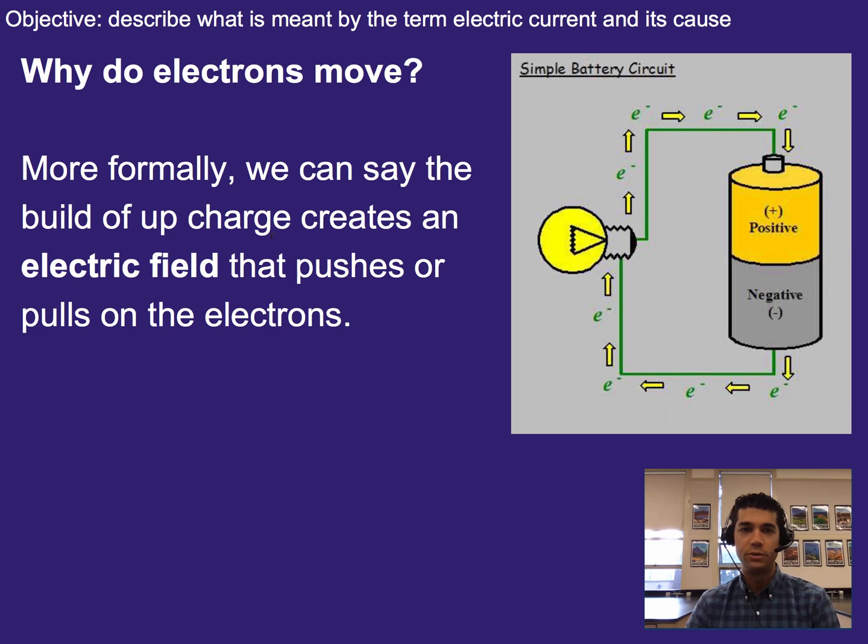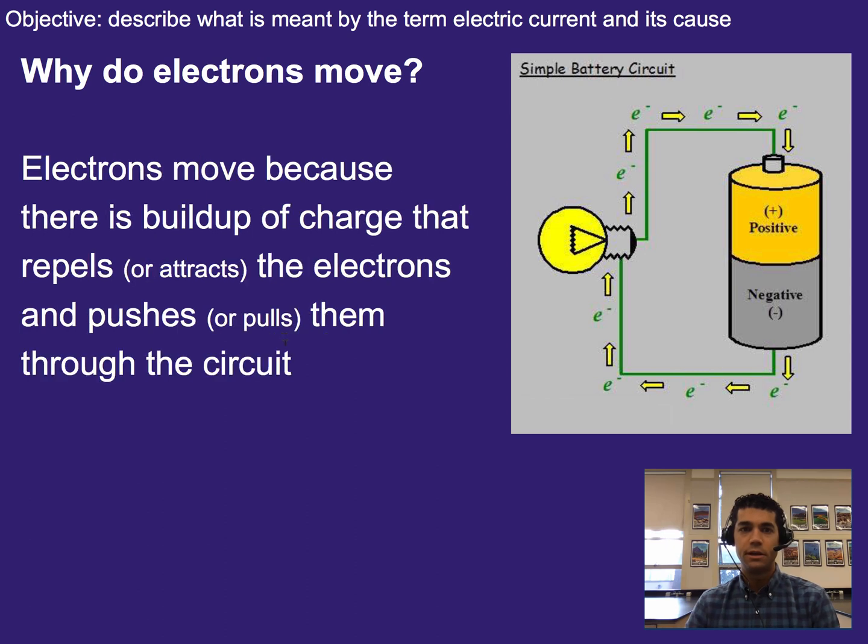More formally, we could also say that the buildup of negative charge over here creates an electric field that pushes or pulls the electrons through the circuit. We'll talk about what an electric field is at a later date. This is a more formal way of talking about it. We're not really too concerned with that at this point. Now, electrons move because there is that buildup of charge, as I mentioned, and so that is what pushes or pulls them through the circuit.